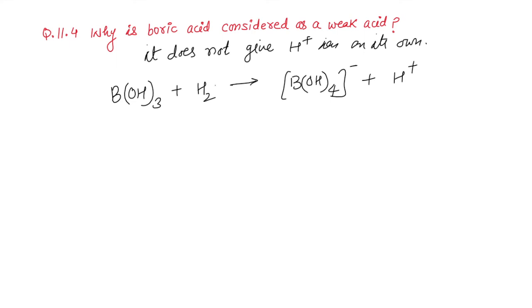That's why you can write it as H-OH. So, this whole OH is transferred to boron which in turn releases H+ ion. That's why it is a weak acid. So, what is the reason?